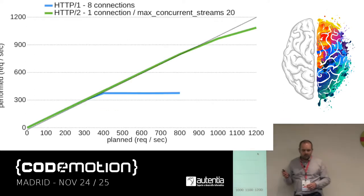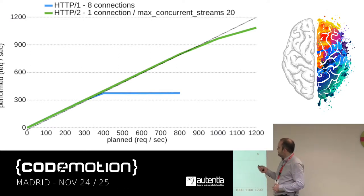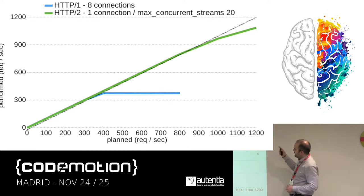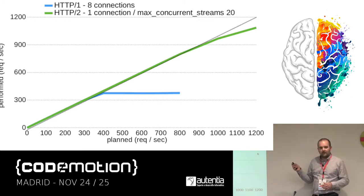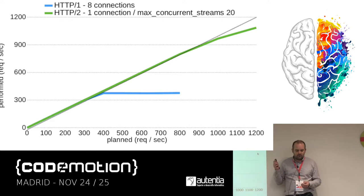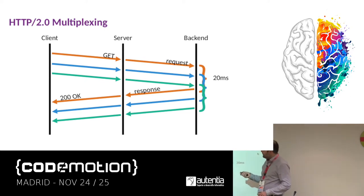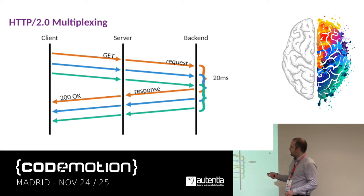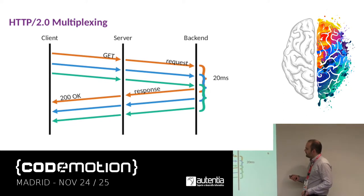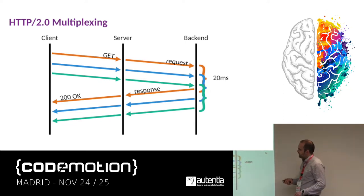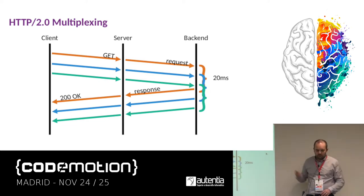Now with HTTP2, we have much better results. This is with a blocking thread-pool-based application — something like Tomcat or Spring. Thanks to multiplexing, the client can send multiple requests at the same time on the same connection. The server goes to the backend and after 20 milliseconds, they all reply at the same time — that's why you see many more requests per second.